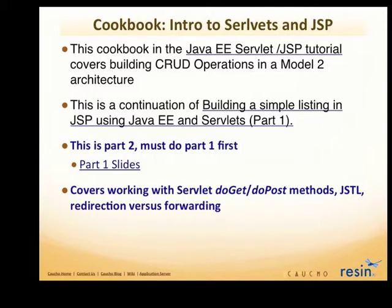Essentially we had a servlet. When you went to a URL that basically hit that servlet, that servlet would then forward to a JSP and would render a book listing for a sample bookstore. Now this is part two — it's a continuation of part one. So if you haven't done part one, you need to find part one.